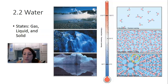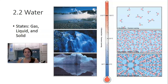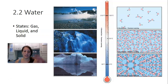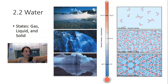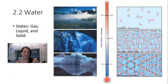In ice — the solid form of water — each water molecule is hydrogen bonded to the maximum number of other water molecules, which is four. In this solid form, the water molecules are at a maximum distance from each other; they're spread out because they're hydrogen bonded. Without the hydrogen bond, they can get closer to each other. So in ice, the molecules are at the farthest distance they can be from each other.